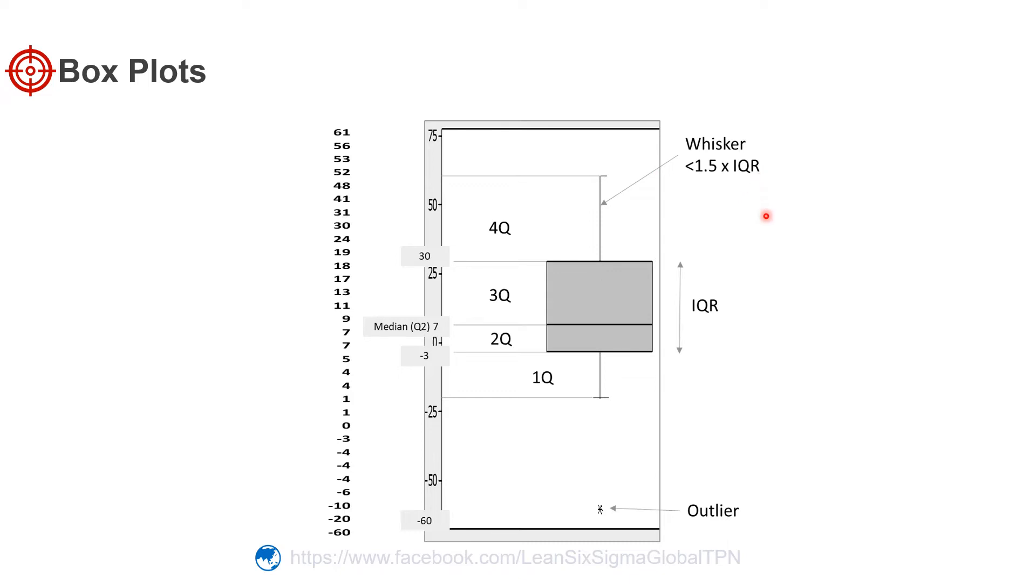Next we draw a box to encompass the middle two quarters, or 50 percent of the data points. The line that divides the data in half is called the median or second quartile.